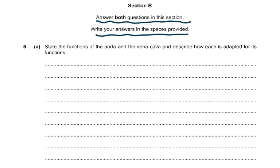The question asks you to state the functions of the aorta and the vena cava and describe how each is adapted for its function. Basically, one is an artery and one is a vein. The aorta is the largest artery of the body; the vena cava is one of the veins of the body.